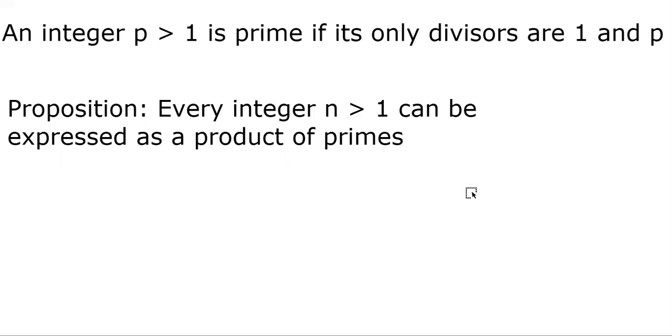An integer p greater than 1 is prime if its only divisors are 1 and p. For example, 3 is a prime number because the only numbers that divide 3 are 1 and 3. 4 is not a prime number because other than 1 and 4, 2 also divides 4. So interestingly,